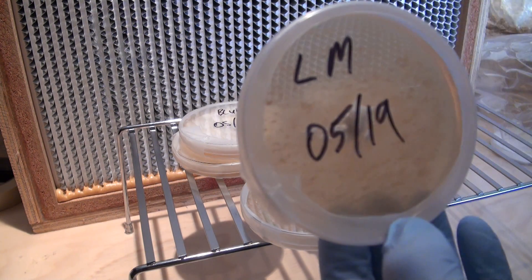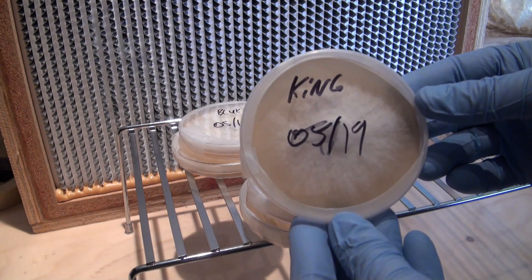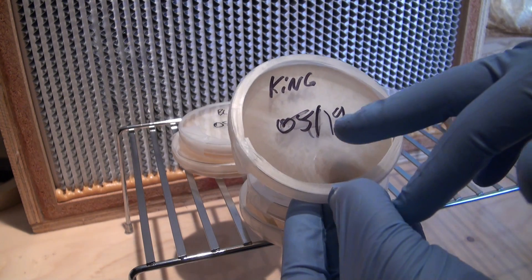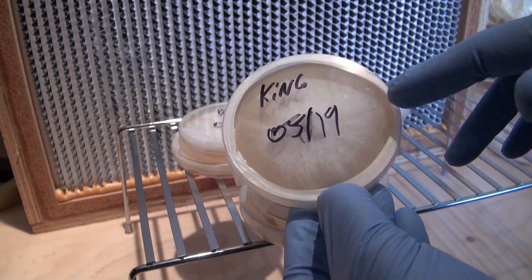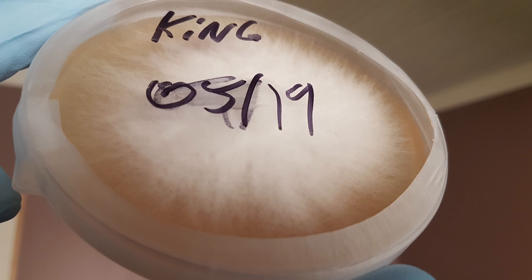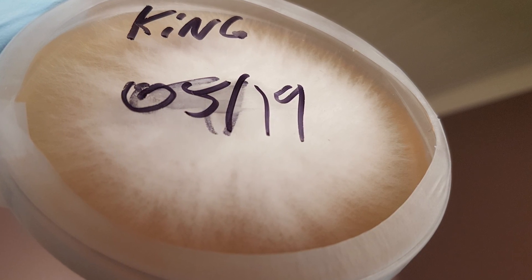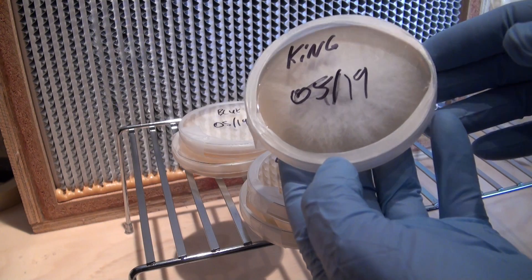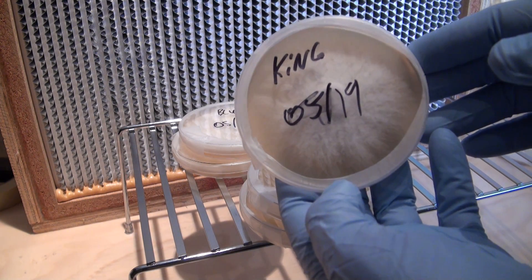Now here is some king oyster mycelium. As you can see, it's probably more similar to the blue oyster. The mycelium is not quite as fluffy and non-uniform as the blue oyster, but it's not anywhere near as uniform as the reishi. It's a little bit loose, a little bit fluffy, but it is pretty fast growing, although not quite as fast as perhaps blue oyster or reishi.